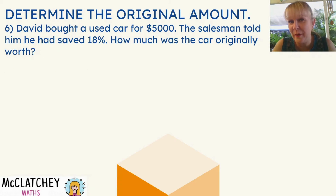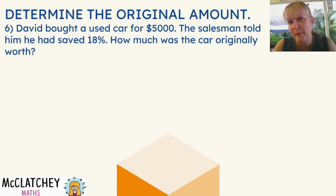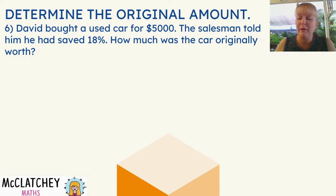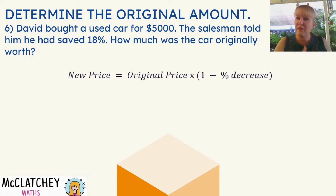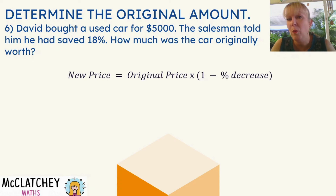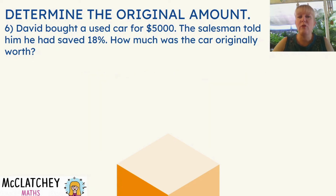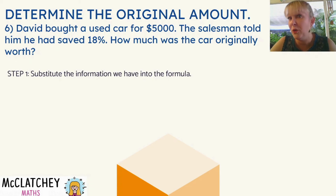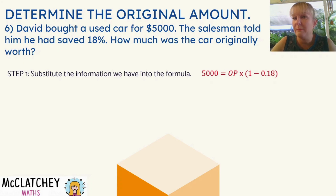We're on to our second last worked example today, and this is one that people typically struggle with: finding an original amount. David bought a used car for $5,000 — that's what David paid. The salesman told him he had saved 18%. How much was the car originally worth? Now I'm going to provide you with the formula. Our new price equals the original price multiplied by (1 minus the percentage decrease). We need to work out what that original price is. We'll substitute the information we have into the formula: $5,000 equals the original price multiplied by (1 − 0.18) because it's a price decrease.